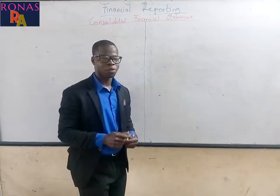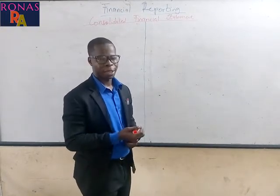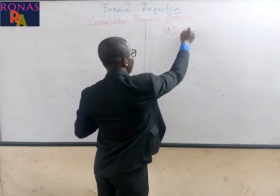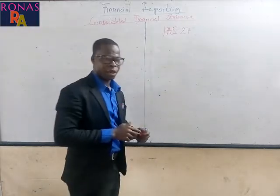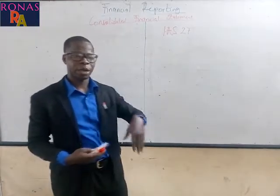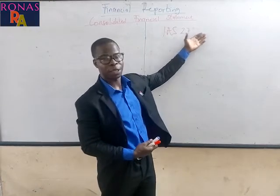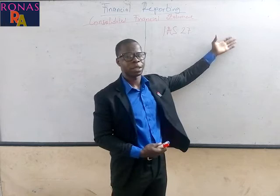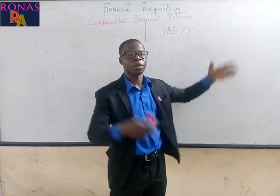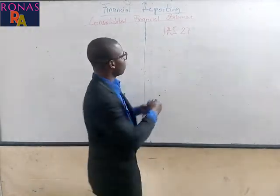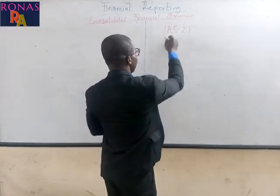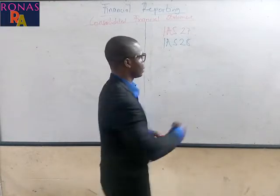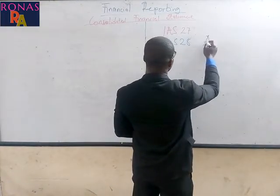The first standard is IAS 27. IAS 27 is what we have been preparing so far — accounting for a single entity, or preparing financial statements for a single entity. We are familiar with it. Then we also have IAS 28. IAS 28 is investment in associate.